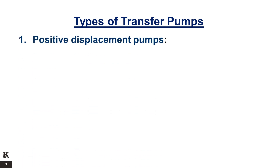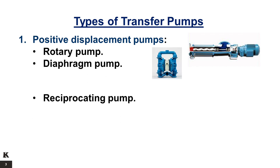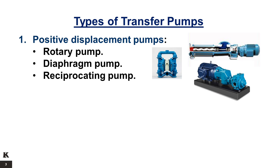Types of transfer pumps. 1. Positive displacement pumps. Positive displacement pumps employ a moving piston and either a plunger, diaphragm, or rotor to move a fixed volume of liquid per revolution of the pump. It includes rotary or screw pump, diaphragm pump, and reciprocating pump. Positive displacement pumps are generally used for fluids with a relatively high viscosity. They can be used where high accuracy is required, for example in metering, or where high pressure is required, for example high pressure washing.